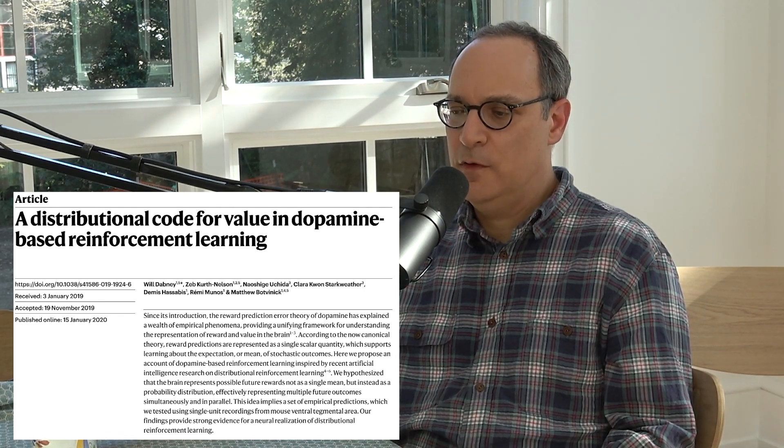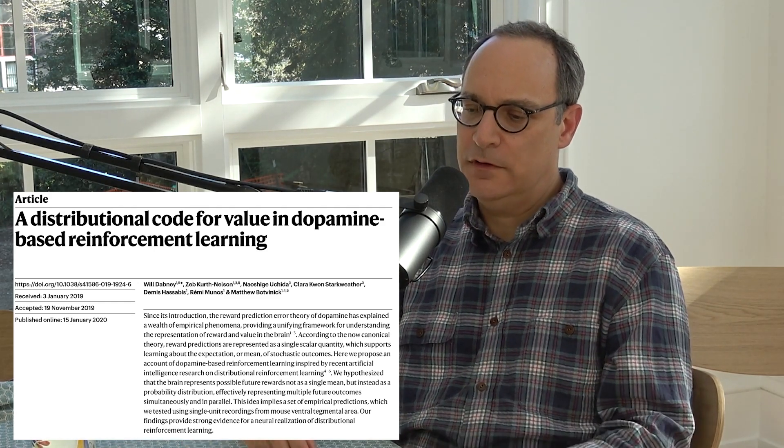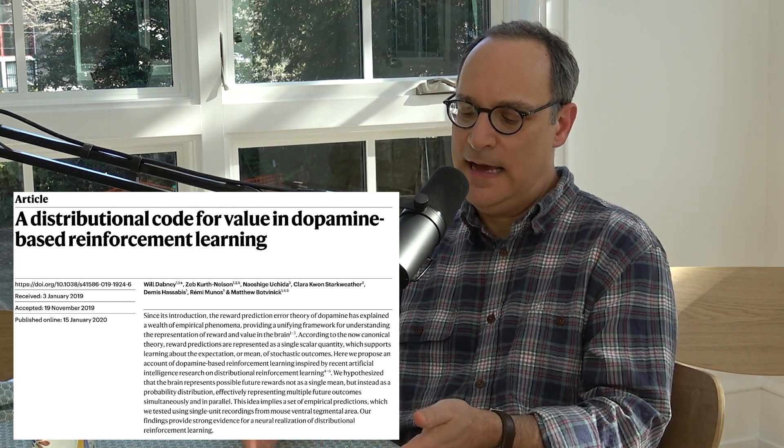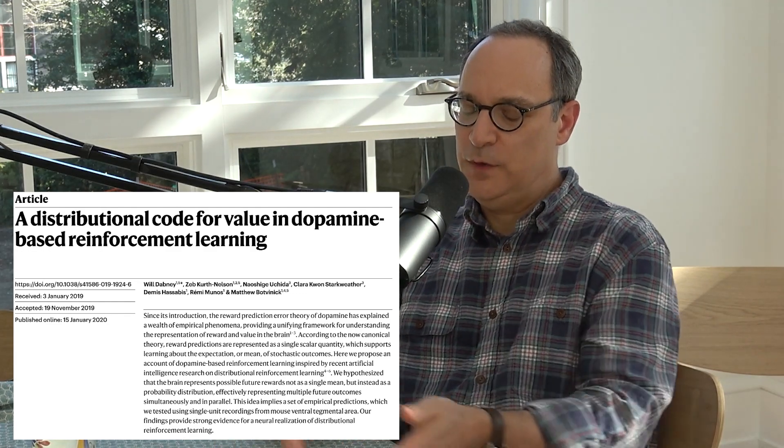A number of people at DeepMind and a few other places had started working on a new version of reinforcement learning, defined by taking something from traditional RL and tweaking it. The thing they took was the value signal — at the center of most RL algorithms is a representation of how well things are going: your expected cumulative future reward, usually represented as a single number. If you imagine a gambler in a casino, that situation would be represented as a weighted average of all those outcomes.